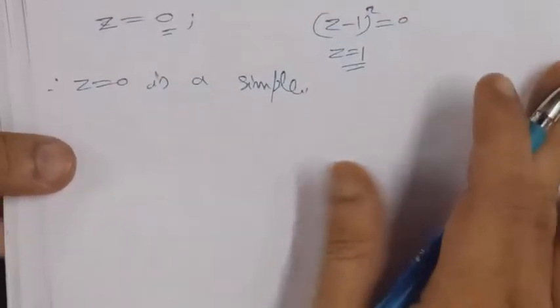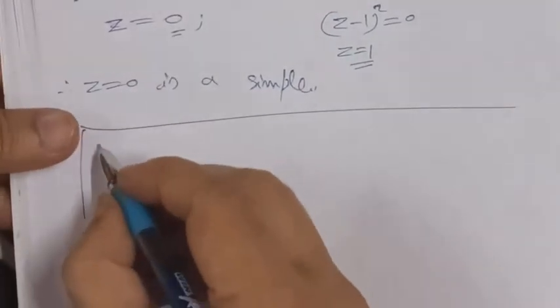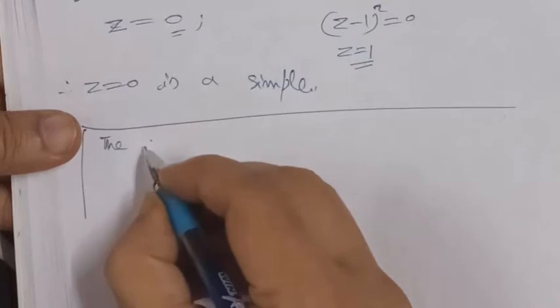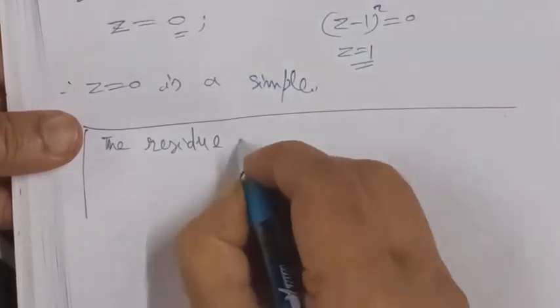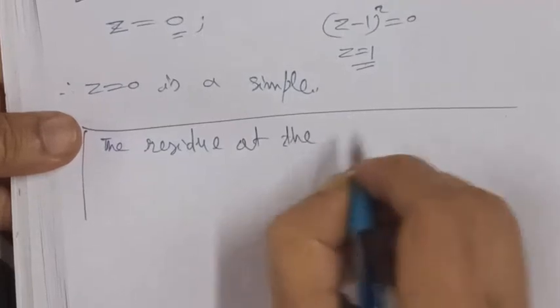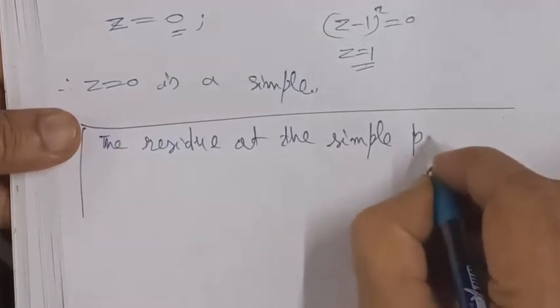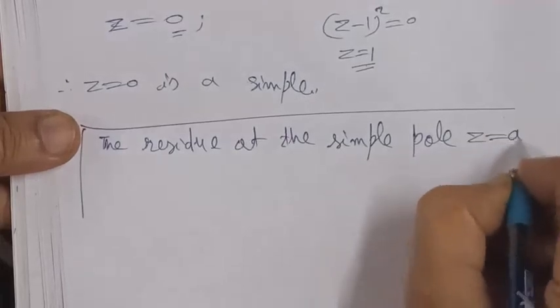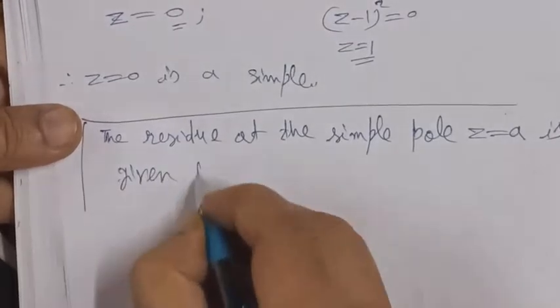For a simple pole, the residue formula is: residue at the simple pole z = a is given by the limit as z tends to a of (z - a) times the function f(z).